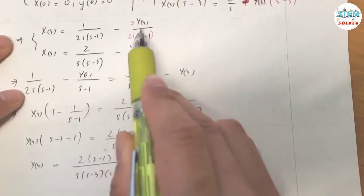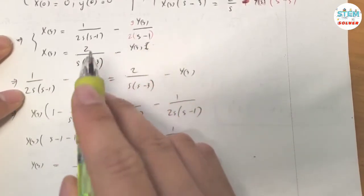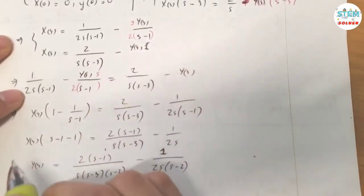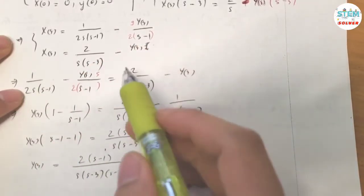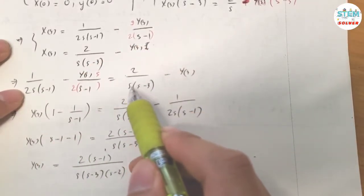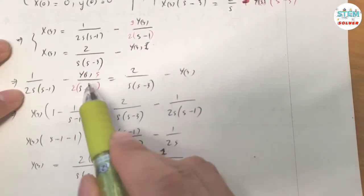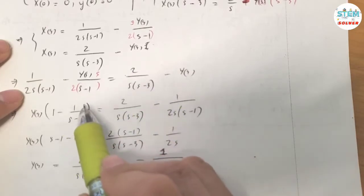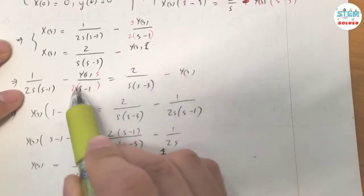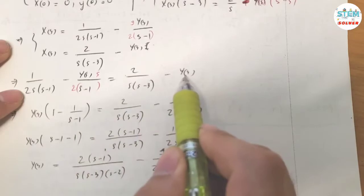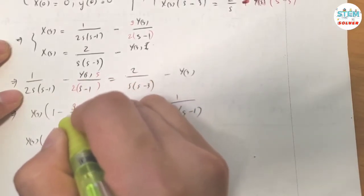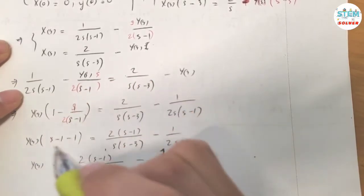Now substitute down here. So, we have one over this minus capital S times Y(S) over this. Move this term to the other side, giving one minus S over 2 times (S minus 1).